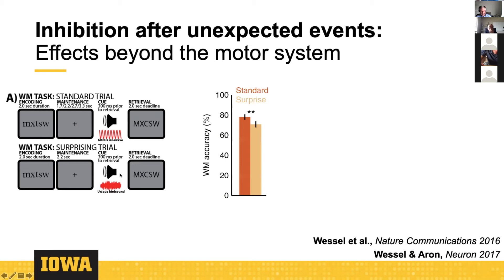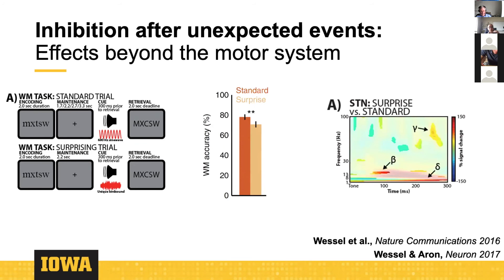Behaviorally, these unexpected events in the delay interval reduce accuracy on the working memory probe — they interrupt, or we argue inhibit, the active working memory content. The primary evidence that this is inhibitory comes from the subthalamic nucleus, a narrowly defined region with specifically assigned functions in the basal ganglia, which is active after these unexpected events. Moreover, STN activity following the unexpected event mediates the behavioral effects — unexpected sounds triggering more STN activity led to more errors on the working memory probe.